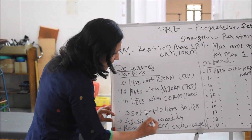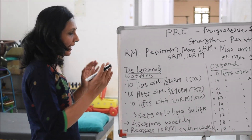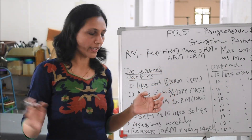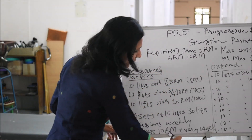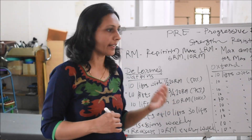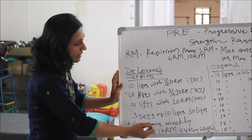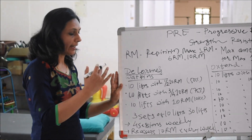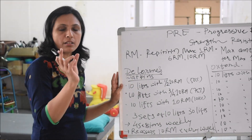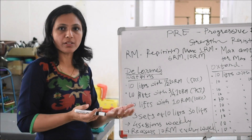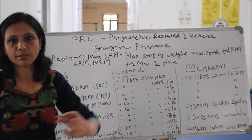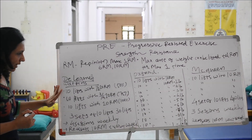So 30 repetitions make one session, and you give 4 sessions in a week. In the next week you reassess the 10RM, which will likely be a newer, higher value because the muscle has been strengthened by 4 sessions of exercise during the week.